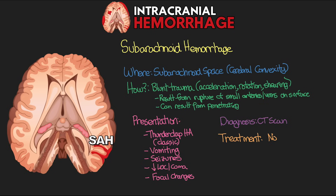Unlike subarachnoid hemorrhages associated with hemorrhagic stroke, in traumatic subarachnoid hemorrhage there is really no surgical intervention available. We can use an EVD to help reduce CSF and relieve pressure, but primarily treatment revolves around treating the patient's ICP and trying to reduce secondary brain injury.